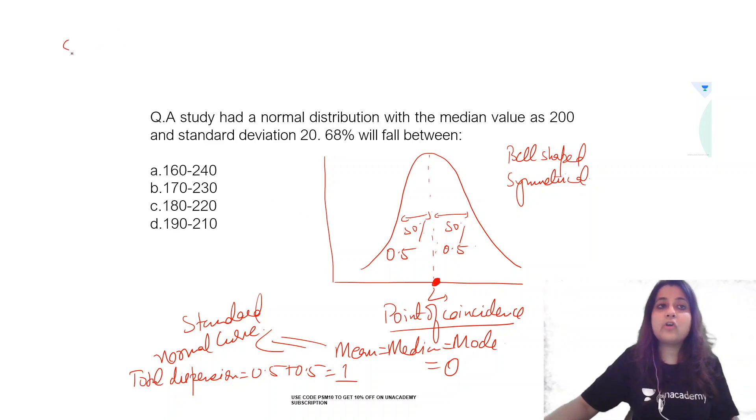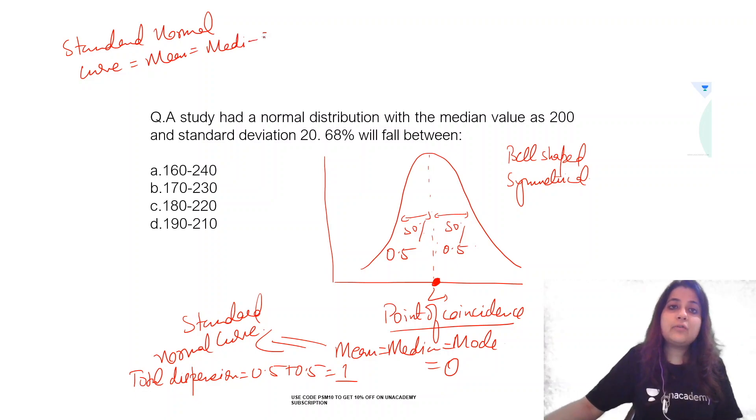So for a standard normal curve, the first thing that you must understand: mean is equal to median is equal to mode is equal to 0, and standard deviation is 1.